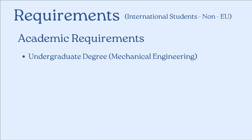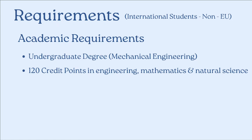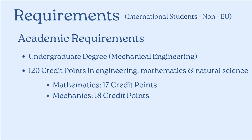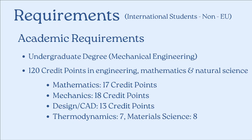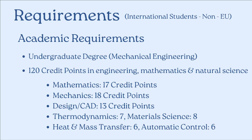Let's start with the academic requirements. You must have an undergraduate degree in mechanical engineering, and in that degree you must have studied at least 120 credit points in engineering, mathematics, and natural science. These 120 credit points are further divided into: 17 credit points in mathematics, 18 in mechanics, 13 in design and CAD-related subjects, 7 in thermodynamics, 8 in materials science, 6 in heat and mass transfer, and 6 in automatic control.